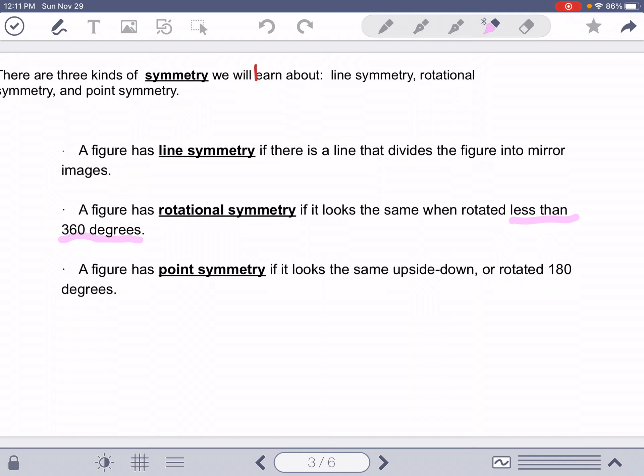Point symmetry if the object that you're rotating looks the same upside down, or if you rotate it 180 degrees. Now, these might seem a little bit confusing until you're actually doing some examples.